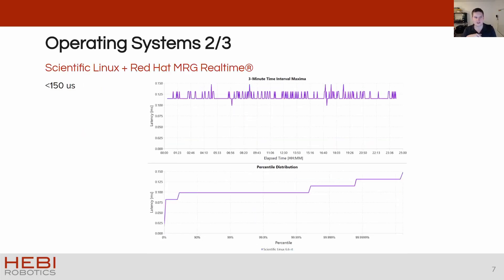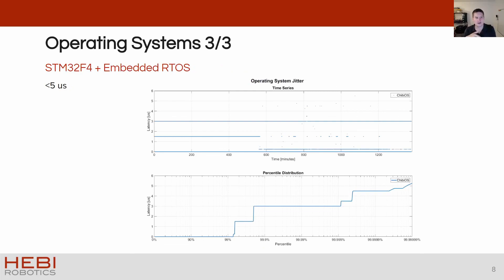Next we tested Scientific Linux with Red Hat's MRG real-time extension, or real-time Linux. There the worst case jitter went down to sub-150 microseconds — an order of magnitude better. Lastly, we tested a dedicated microcontroller with a specialized real-time OS, or RTOS. The results are expectedly very good, and we can get down to levels of single-digit microseconds.